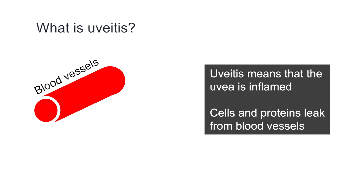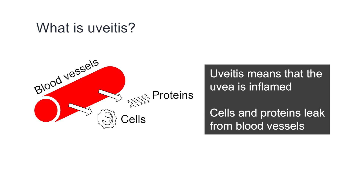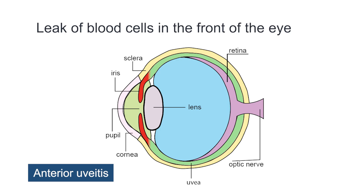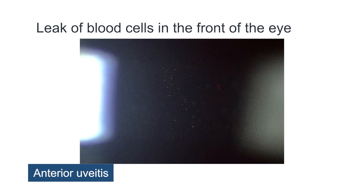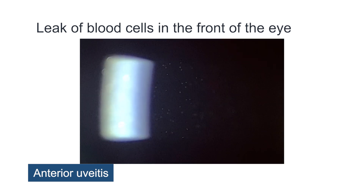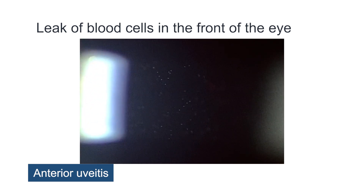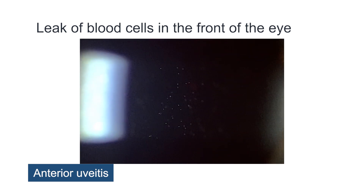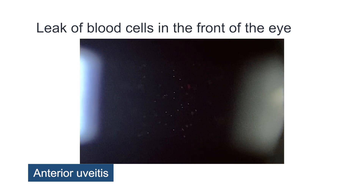In inflammation, the blood vessels become leaky, allowing cells and protein to escape. If it happens in the front part of the eye, we call this anterior uveitis. Escaped blood cells can be seen by an eye specialist through a microscope that we call a slit lamp.